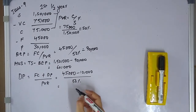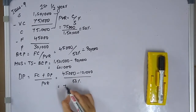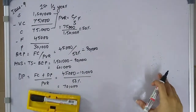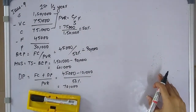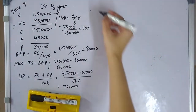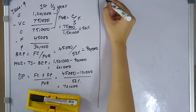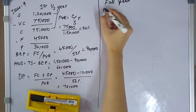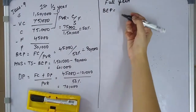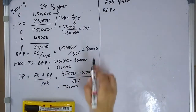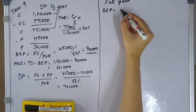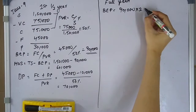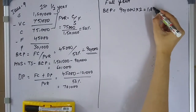For the whole year BEP: the first half BEP is 90,000, multiplied by 2 gives us 180,000 as the full year break-even point.